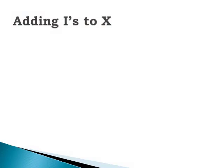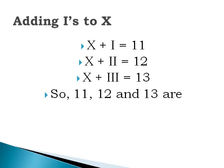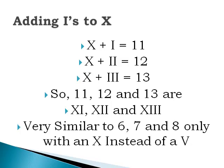Similarly, you can add I's to X's when an I follows an X, adding 1 to 10. So XI equals 11, XII equals 12, and XIII equals 13. You can see how this is very similar to 6, 7, and 8 — only we're adding 10s because they proceed with an X instead of a 5 with a V.